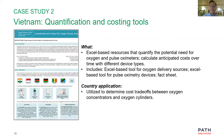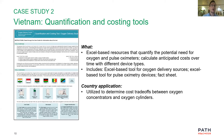I'm going to present briefly on the PATH quantification and costing tool. This is an Excel-based tool used to quantify the potential need for both oxygen and pulse oximeters, and to calculate anticipated costs over time with different types of devices. It is meant to be used with decision makers and implementers, and is really useful for thinking about long-term cost trade-offs when it comes to different oxygen sources.